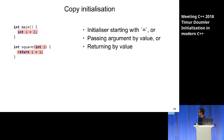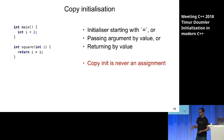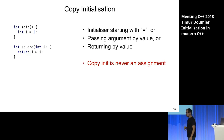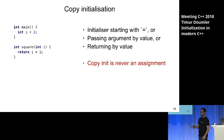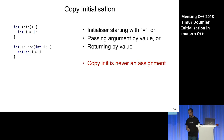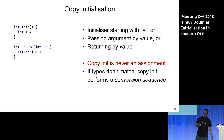One thing confusing to beginners is that copy initialization is actually never an assignment, even though it has an equal sign. On an object, this would call the copy constructor — it would never call the copy assignment operator. There's no assignment anywhere in this talk; we're only talking about initialization. The other thing about copy initialization is that if the type of the initializer and the object don't match, you perform a conversion sequence.